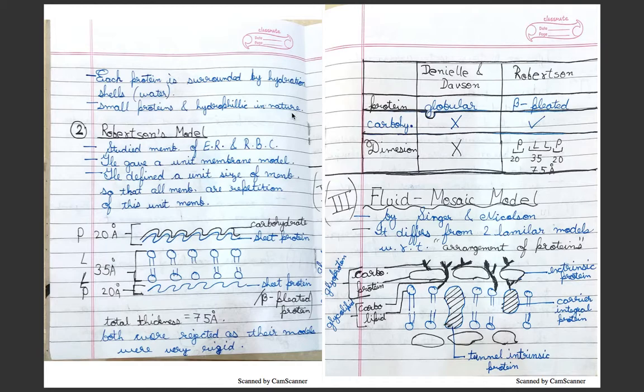Robertson model: They studied the membrane of endoplasmic reticulum and red blood cells. He gave a unit membrane model. He said that there is a unit size of membrane and that all unit membranes in the world are just repetition of this unit membrane.